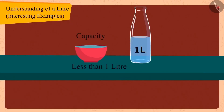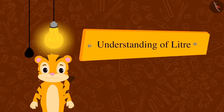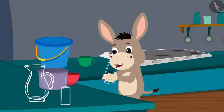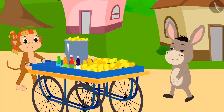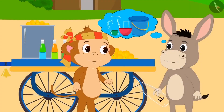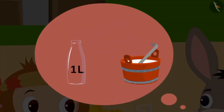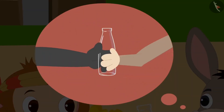In the previous video, we learned about how we can use litre L to measure the capacity of utensils. In this video, we will see some misconceptions related to this. Bholla is so excited about his one litre bottle that he has come to Babban's stall today to share his experience and told Babban everything about measuring the capacity of utensils in litres and how Golu gave him that one litre bottle.